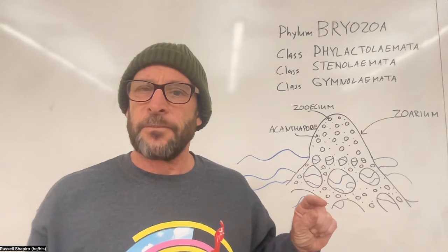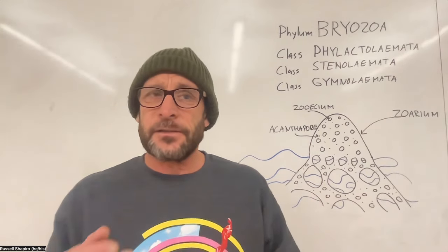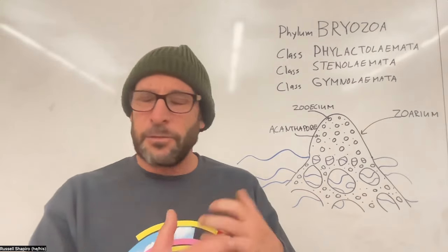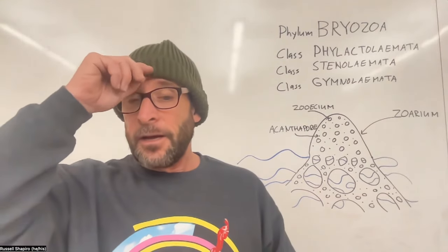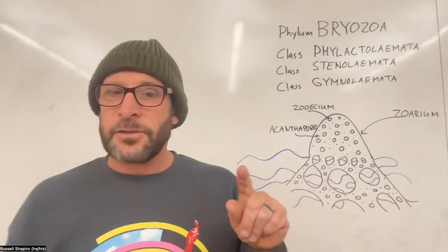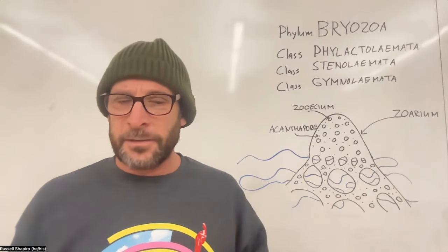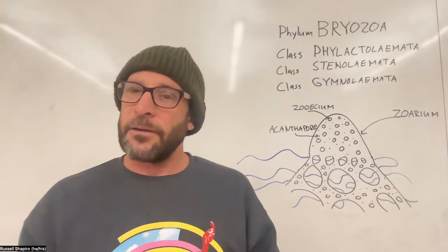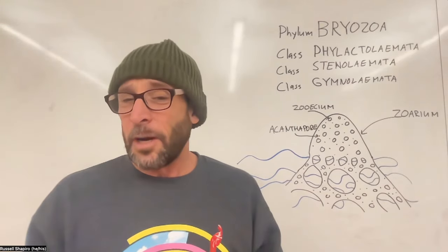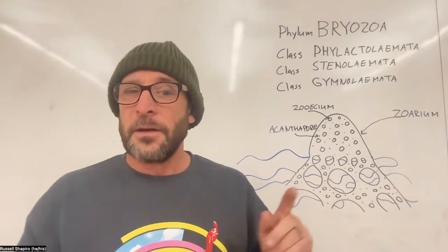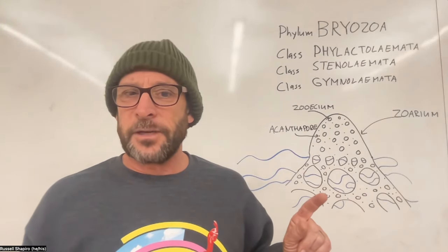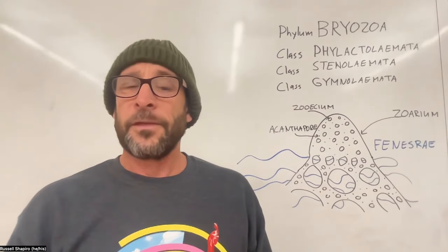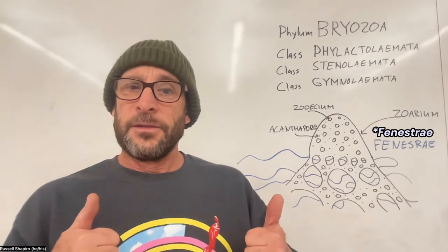Now, the holes where the zoids lived - the zoecia - don't get those mixed up with real holes that go all the way through the skeleton. We use the Latin term fenestrae. A lot of bryozoans have these holes all the way through the zoarium - they're fenestrae - but they're not the holes that the zoids lived in; those are the zoecia. These fossils are often worn, so the holes are hard to see. You just have to keep looking for a well-preserved surface. In some of these holes you'd be able to look through - in a fossil, that probably means you're seeing rock - but the other holes are where the critters lived. Don't mix up the fenestrae with the zoecia.